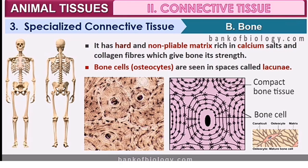In specialized connective tissues, which include cartilages and bones, the structures are hard. These provide support. Cartilage is present in early stages, and when we reach the adult stage it is replaced by bone.